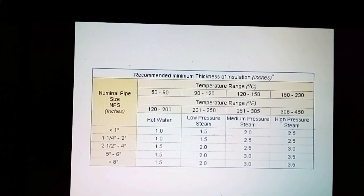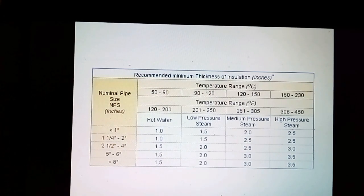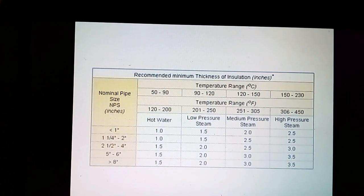The table gives the recommended minimum thickness of insulation in inches. It is for a temperature range of 50 to 280 degrees centigrade, or 120 to 450 degrees Fahrenheit. The ranges of temperature correspond to hot water, low-pressure steam, medium-pressure steam, and high-pressure steam. The nominal pipe size varies from half inch to 8 inches and more.